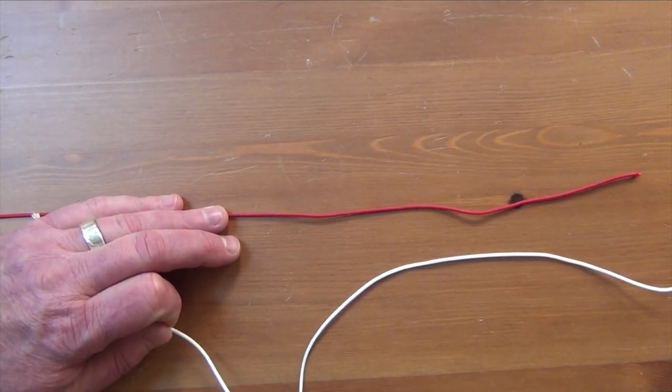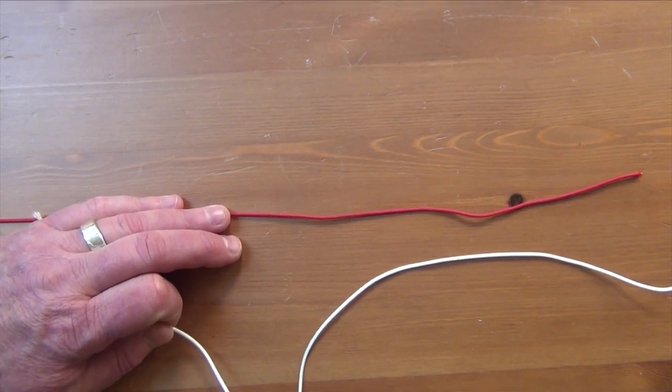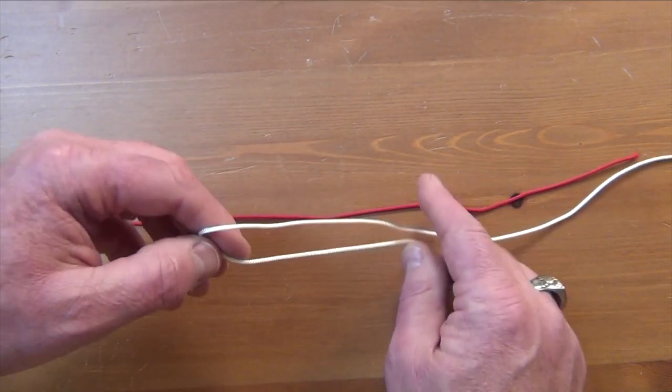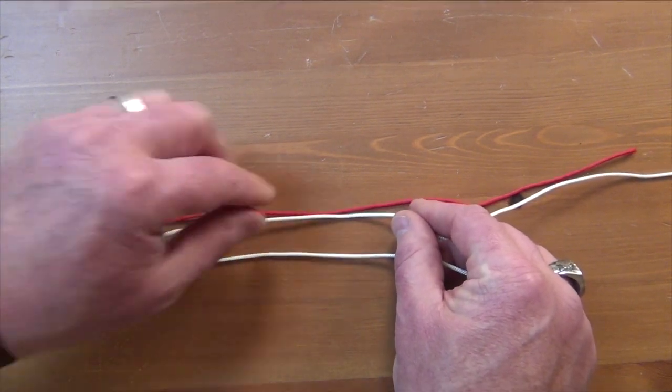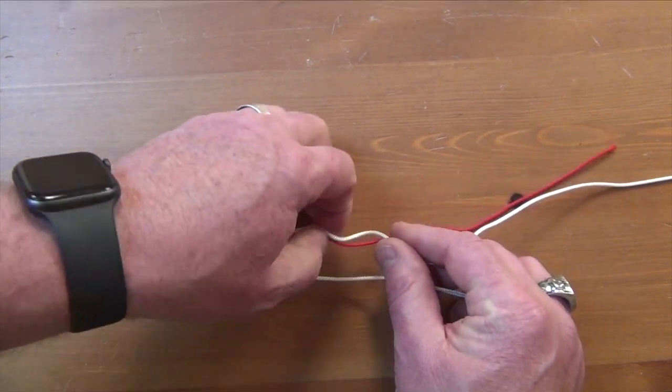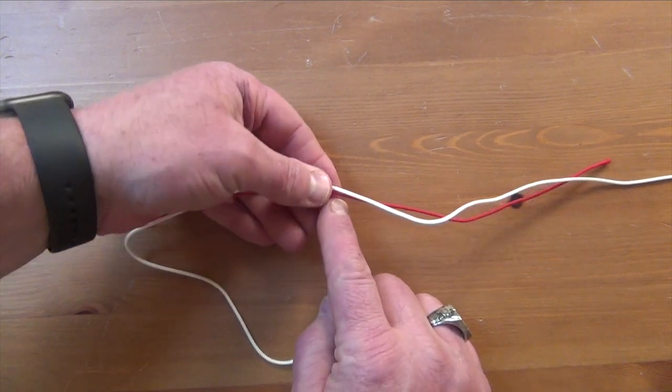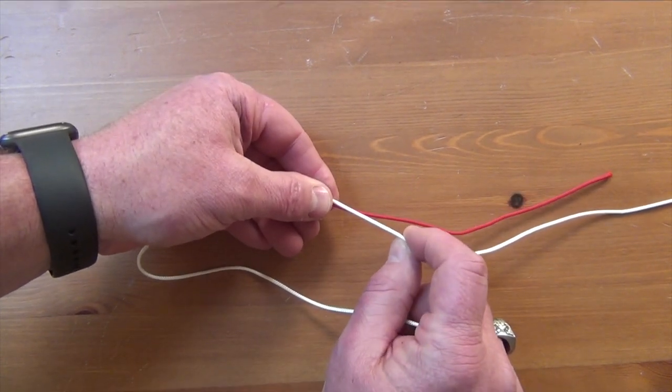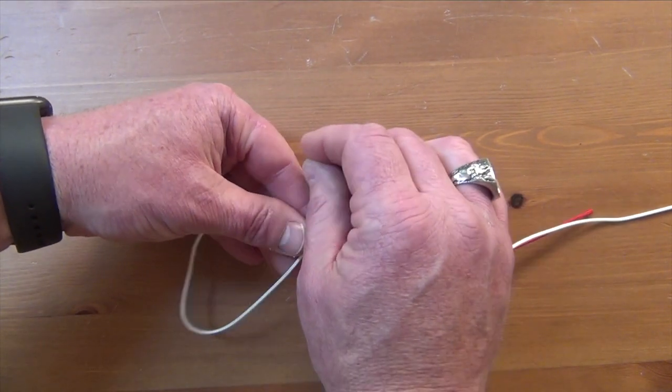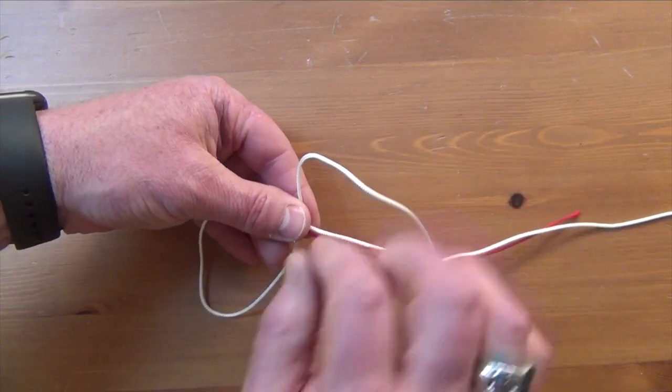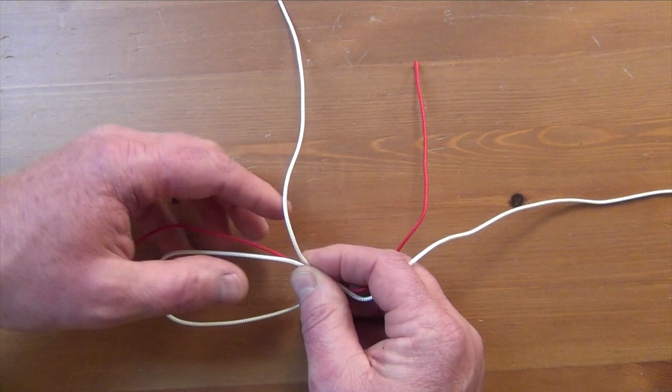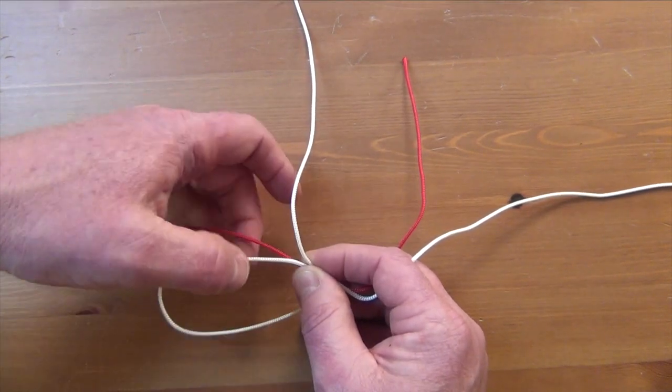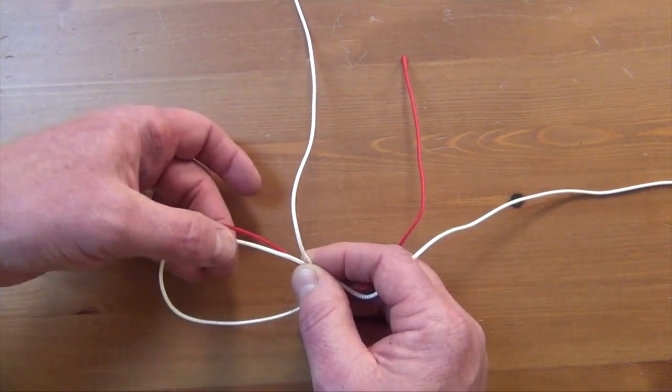What we want to do is we want to double over our fluorocarbon, and then we're going to pinch the main line with the actual leader material, and then we're going to also pinch in the tag end. Now you have a loop here. So here's our main line and this is the leader part, this is the wrap part.